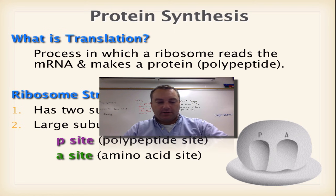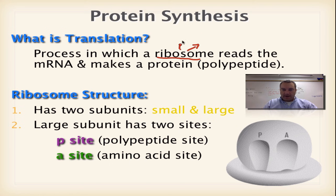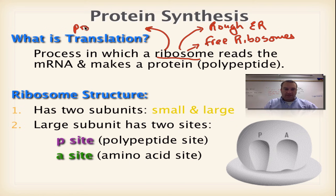Translation is a process in which a ribosome — and ribosomes are going to be found in two places. They're going to be found in either what is called the rough ER, which stands for rough endoplasmic reticulum. When we get to chapter 7, we're going to learn about how all these cell parts are. Or we're going to have what are called free ribosomes, and these are just floating around in the cytoplasm. Basically, what a ribosome is — it's a little protein factory.